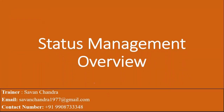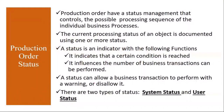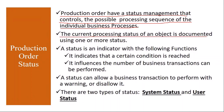First we will understand what is production order status. Production orders have a status management that controls the possible processing sequence of the individual business processes. Each and every process carried out for the production order is tracked through its status. The current processing status of an object is documented using one or more statuses, so the production order status will tell you at what stage it is.